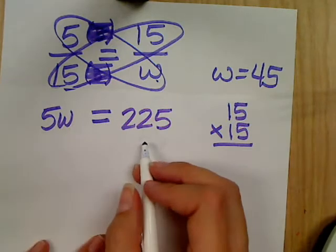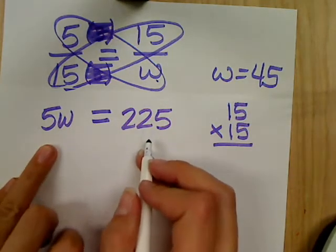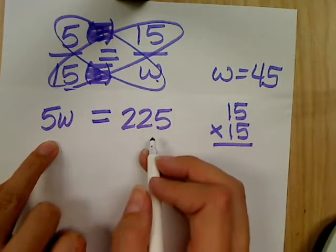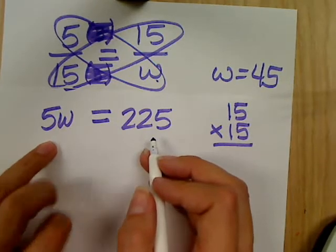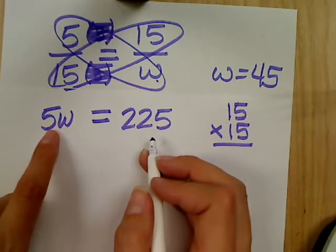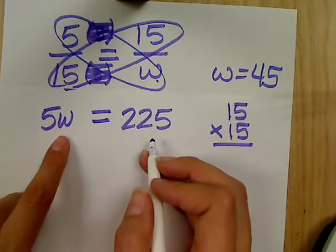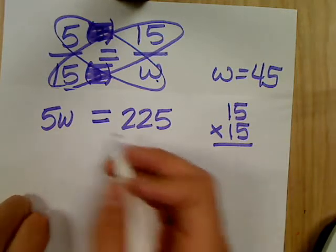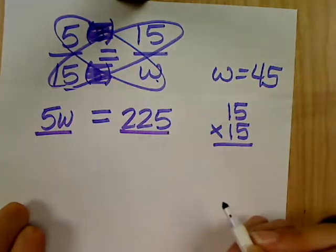Now what do I do? This looks just like an algebra problem I've done already before. What operation is occurring between the 5 and the W? Multiply, right? So we want to do the opposite. What's the opposite of multiply? Divide. What do I divide by? 5.